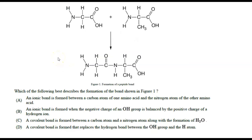Question: which best describes the formation of the bond shown in Figure 1, which shows a reaction between amino acids? Options A and B involve ionic bonds — we can eliminate those because the molecules are clearly drawn as covalent bonds. Option C says a covalent bond is formed between a carbon atom and a nitrogen atom along with the formation of water. Option D says a covalent bond replaces a hydrogen bond between the OH group and the H atom. The answer is C.